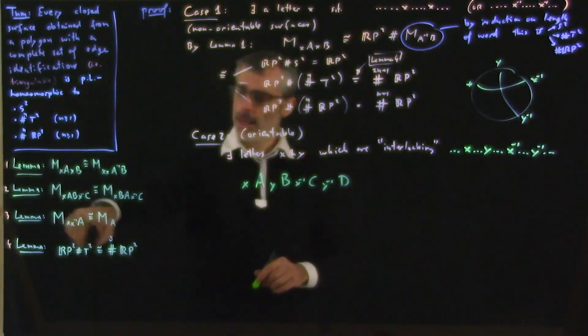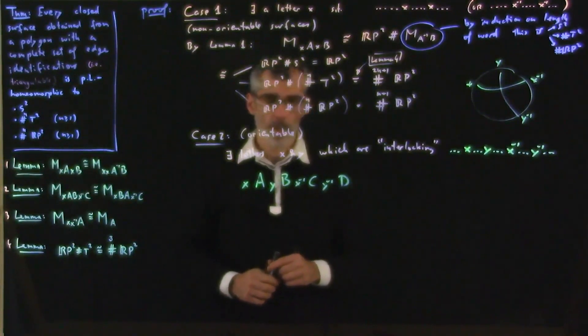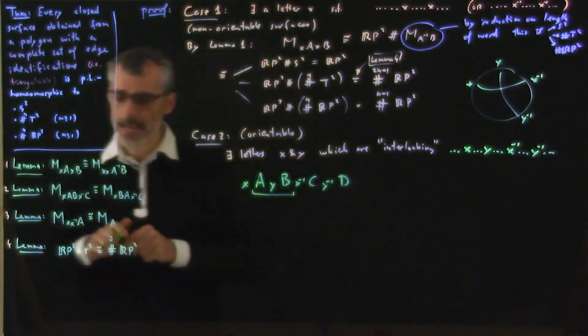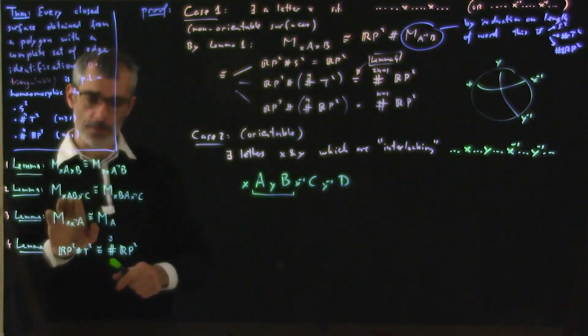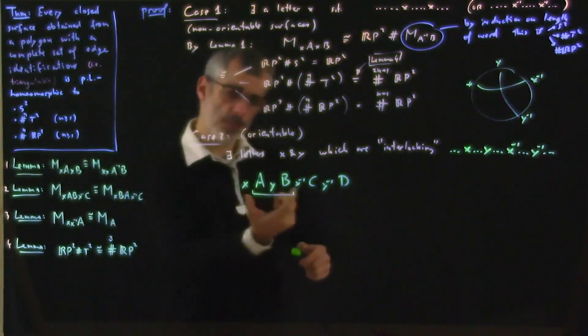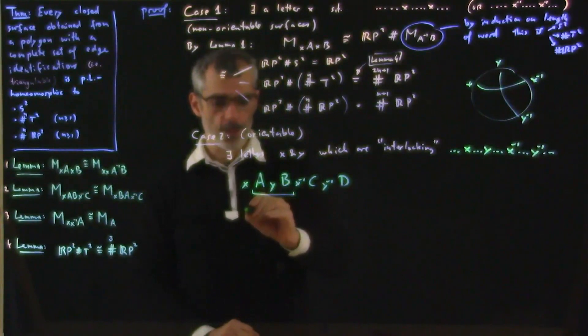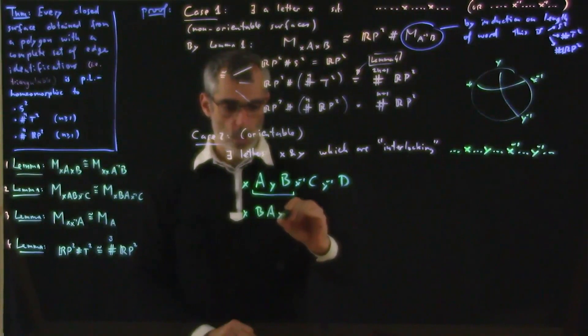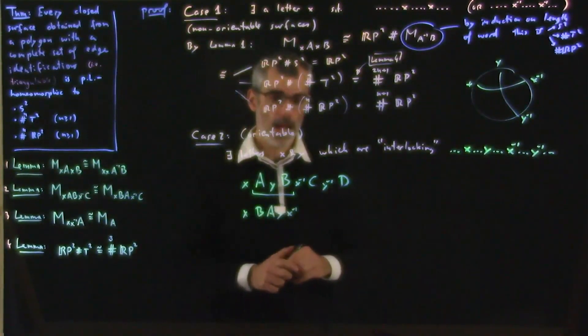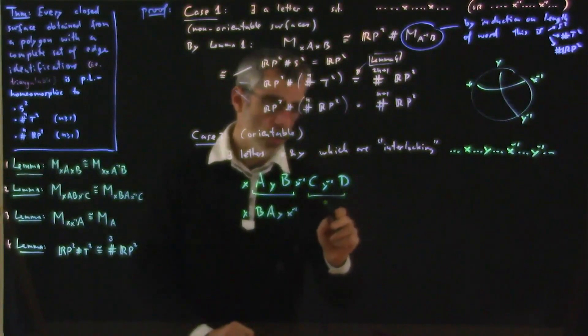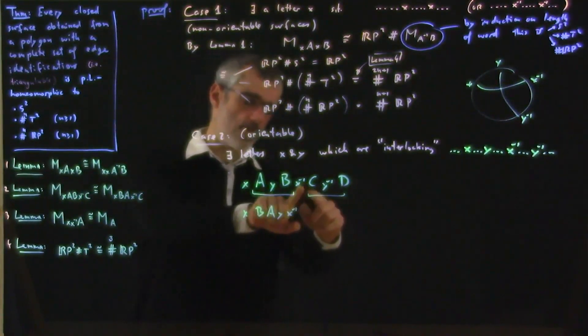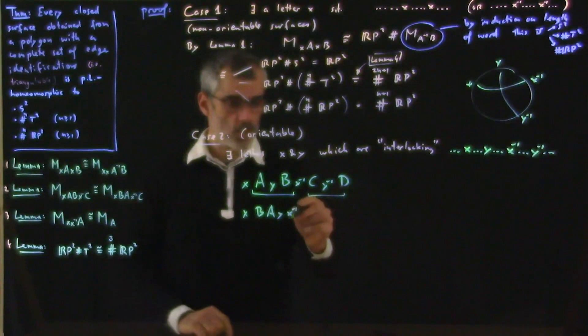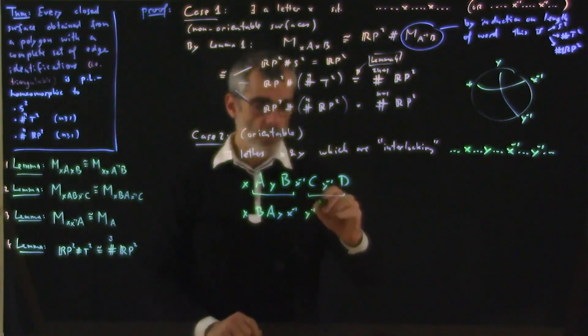And now we're going to apply lemma 2 a number of times. So first we're going to apply lemma 2. So lemma 2 says that between an x and an x inverse, I can perform a cyclic permutation. So here, between x and x inverse, I can perform a cyclic permutation to bring y close to x inverse. So I have B, A, y, x inverse. And here, that's also between an x and an x inverse. It's between x inverse and this other one, which is x. You can imagine it here. And so now again, I'm going to put this y inverse close to this, y inverse DC.